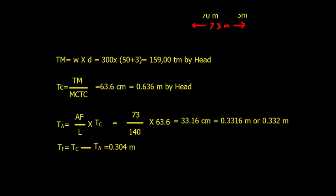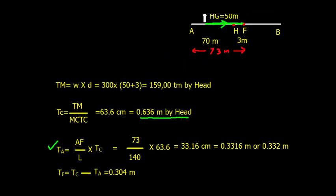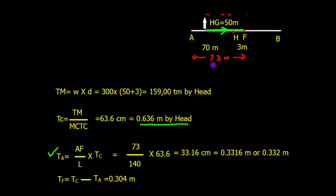Now I need to bifurcate this into forward and aft changes. Let's find what happens at the aft. TA equals AF divided by L times TC, so AF is 73 divided by total length 140 times 63.6, giving 33.16 centimeters.